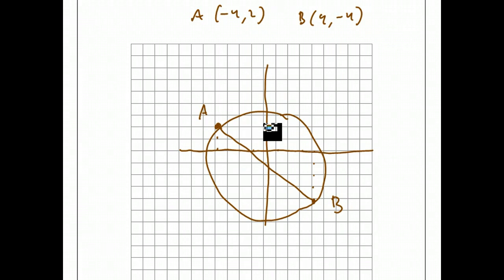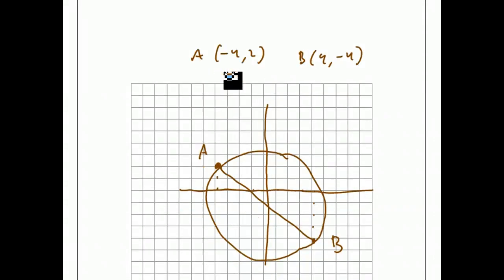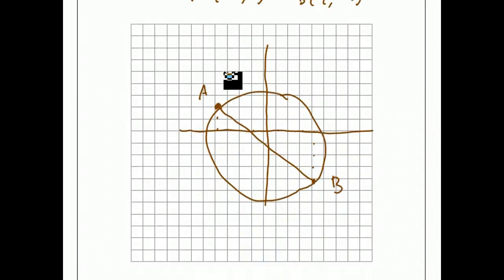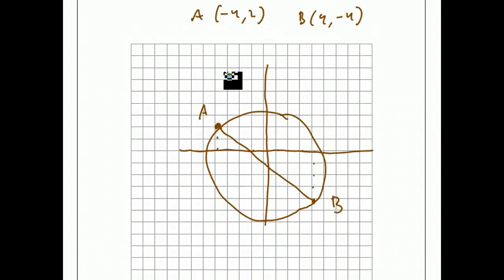The two things you need for the equation of a circle are the center of the circle and the radius of the circle. Those are the two things we can figure out pretty easily. The center of the circle is going to be the midpoint of line segment AB.